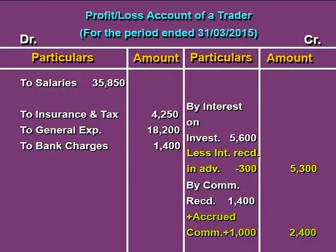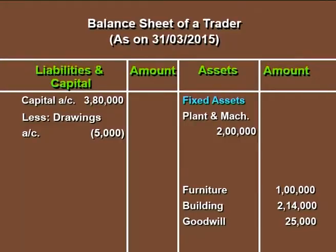Once you have calculated this amount, let us talk about the adjustment effect. Interest on capital is an indirect expense for the business, so it is reported on the debit side of the profit or loss account. The second effect is that we add this amount to the capital in the balance sheet, as it is income to be received by the owner of the business.